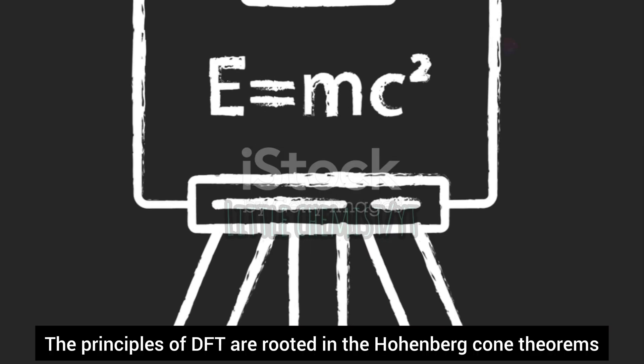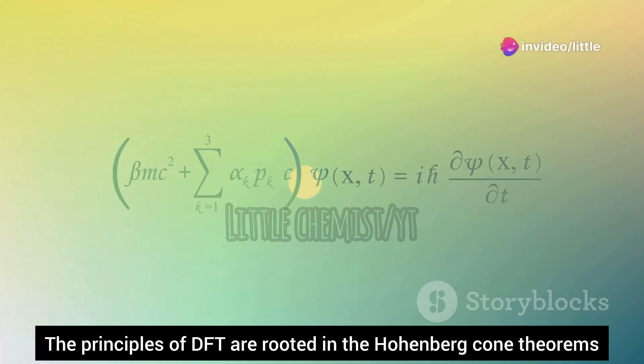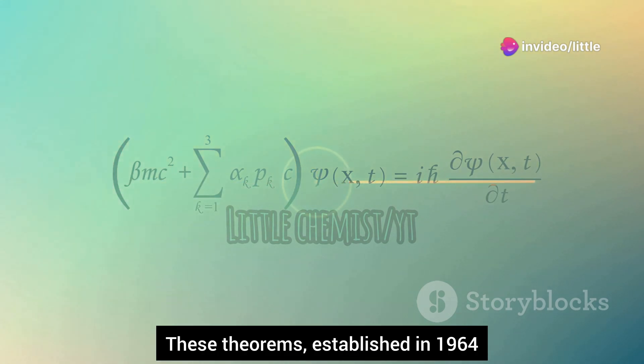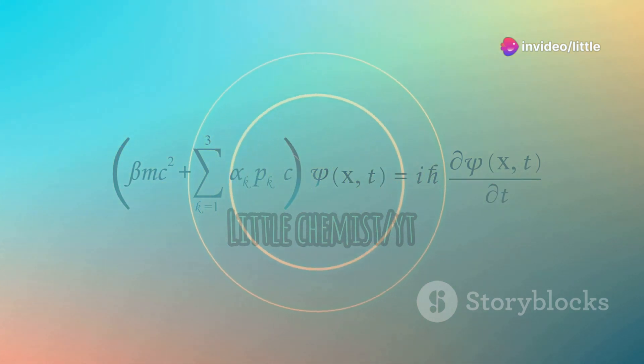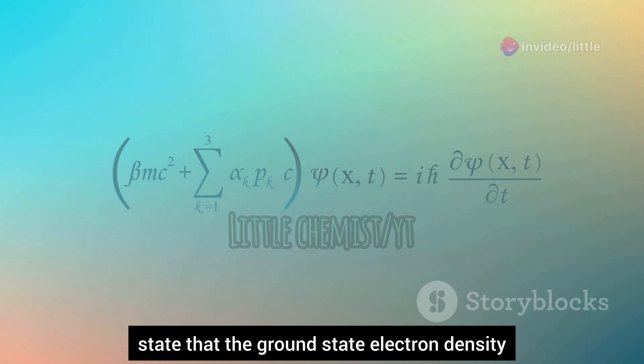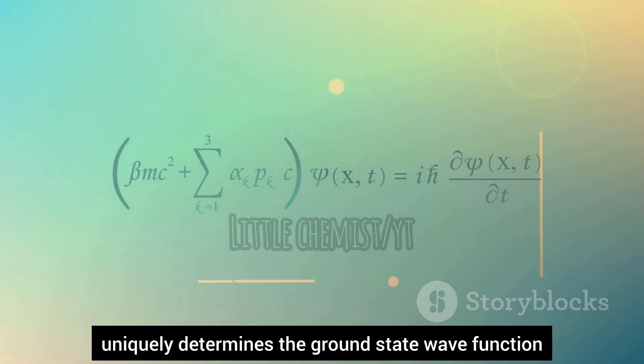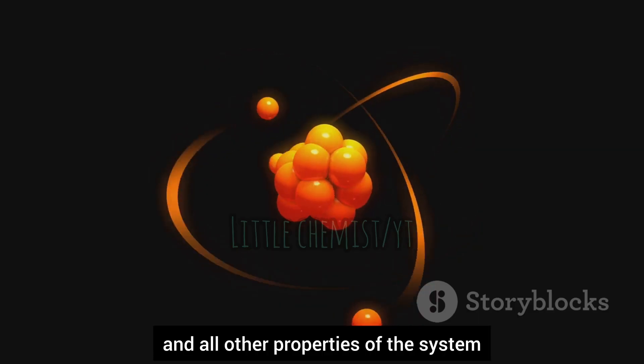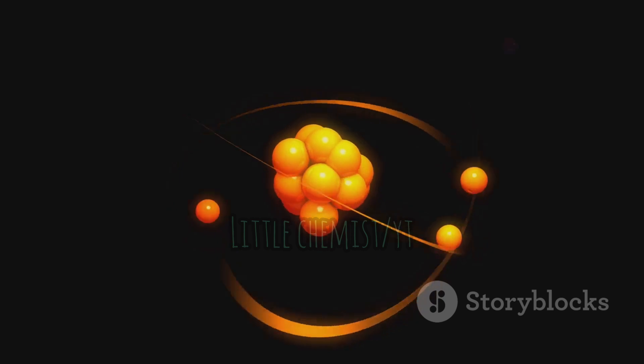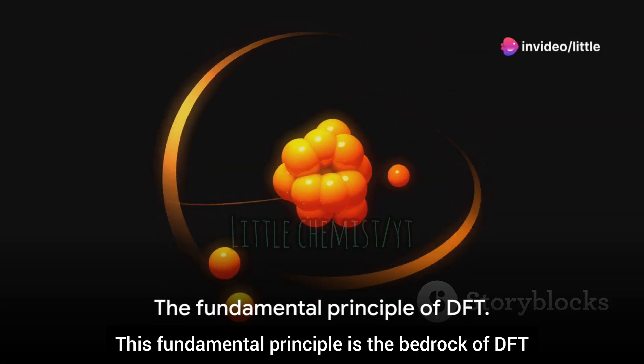The principles of DFT are rooted in the Hohenberg-Kohn theorems. These theorems, established in 1964, state that the ground state electron density uniquely determines the ground state wave function and all other properties of the system. This fundamental principle is the bedrock of DFT.